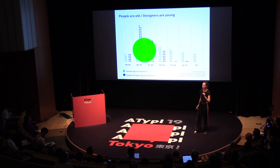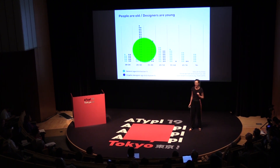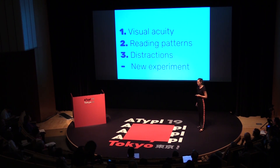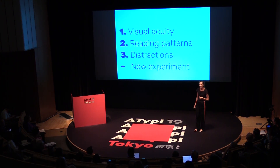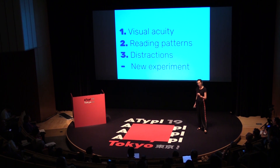To design for the elderly, we need to understand the cognitive and the perceptual limitations that come with age. For that, I'm going to talk about visual acuity, reading pattern, and distractions. And then I'm going to finish off with a new research experiment where we tested both younger and older participants.